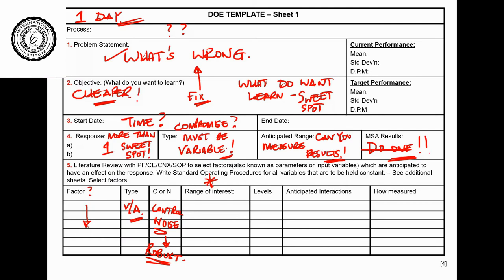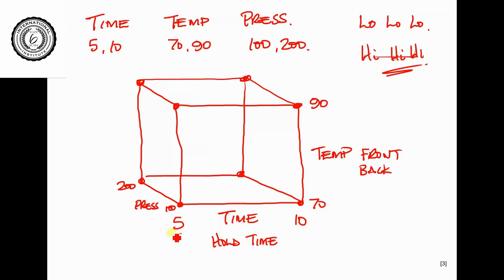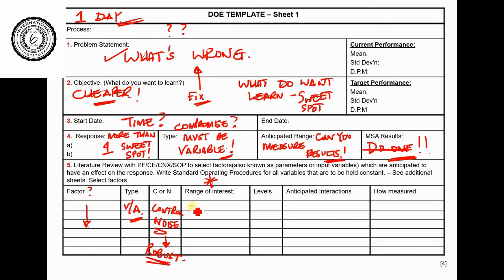This is super important: the range of interest. When designing the design space, the range of interest defines the high and the low. For time it was 5 and 10. This is where your skill comes to bear — you have to decide the size of this box and where it sits in space. I chose 5 and 10, but I could have chosen 7 and 12, or 10 and 35. I chose the region I considered the process would work in, and it's a nice wide region. The key point: the range of interest should be as wide as possible.